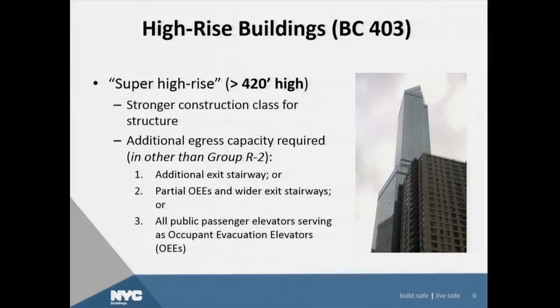Super high-rise construction requires a stronger construction class for the structure — typically 1A construction. For additional egress capacity other than R2, you now have a choice: you can have either an additional exit stairway, or occupant evacuation elevators and wider exit stairways, or all public passenger elevators serving as occupant evacuation elevators.